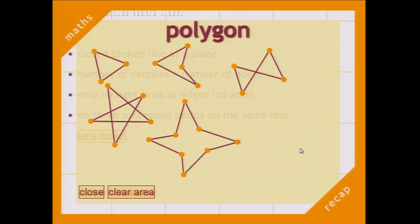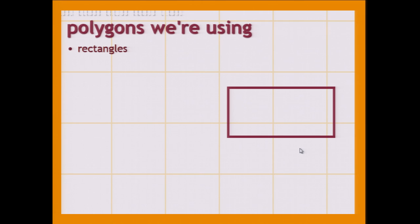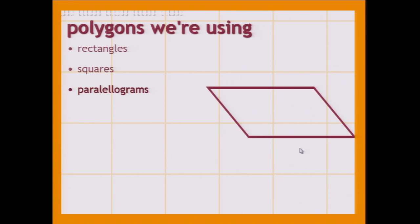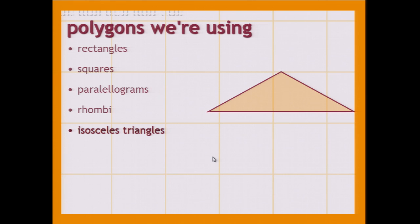We're going to deal with simpler things — the polygons we're going to be using. Rectangles — everything is a rectangle, basically, that's where we start from. Squares — same width and height. Parallelograms — opposite edges are parallel, opposite angles are equal. So the orange ones are equal and the violet ones are equal as well. And rhombi — a rhombus is like a parallelogram, only all its edges are equal, not just the opposite ones. And also its diagonals are perpendicular. And then we're going to have triangles.